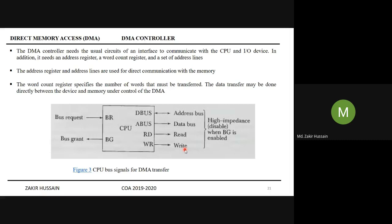The DMA is requesting bus control — that is, the memory bus control — from the CPU. The CPU grants that request, and the bus grant signal goes out to the DMA. When bus grant is enabled, you can see that these signals — address bus, data bus, read, write — all four are disabled, held at high impedance state.